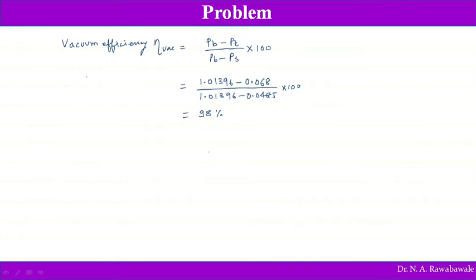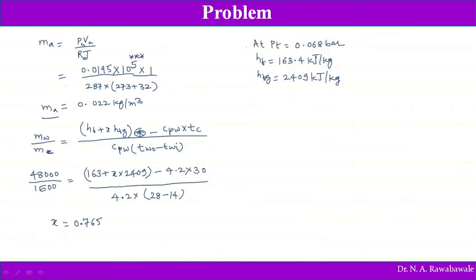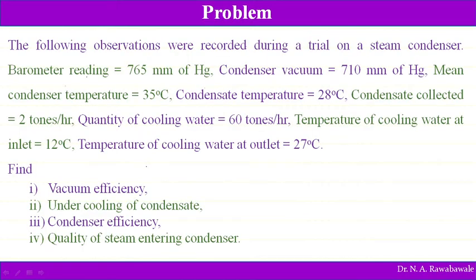Summary of Problem 1 results: mass flow rate of air = 0.022 kg/m³, dryness fraction X = 0.765, and vacuum efficiency = 98 percent.